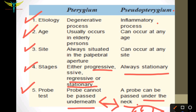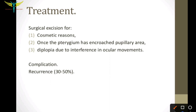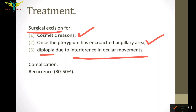Coming to the treatment of pterygium: it is surgical excision, usually done for cosmetic reasons, or if it encroaches upon the pupillary area, or for correction of diplopia caused by interference with ocular movements. A complication of treatment is recurrence, which is seen in 30–50% of cases.